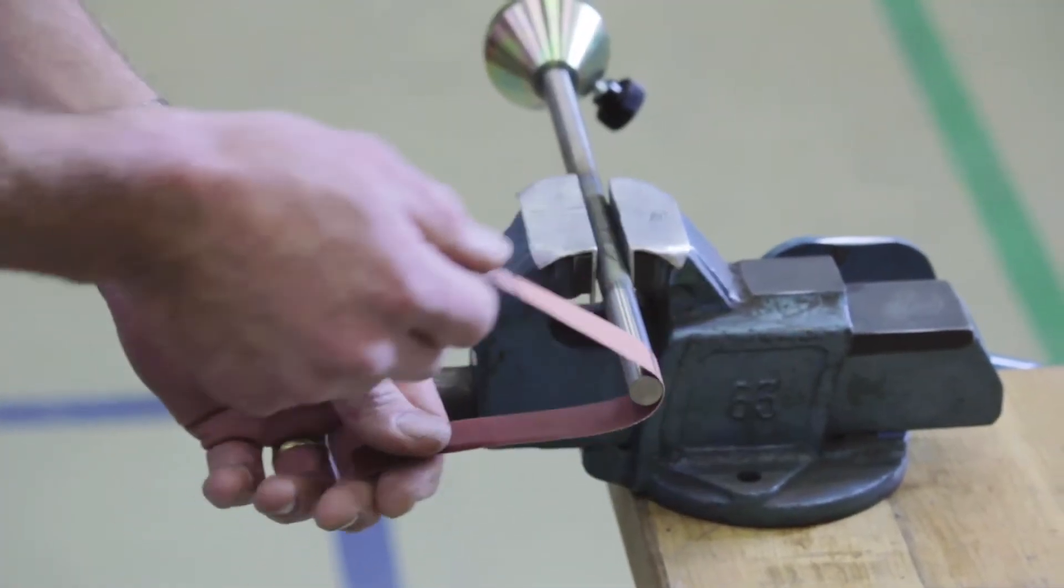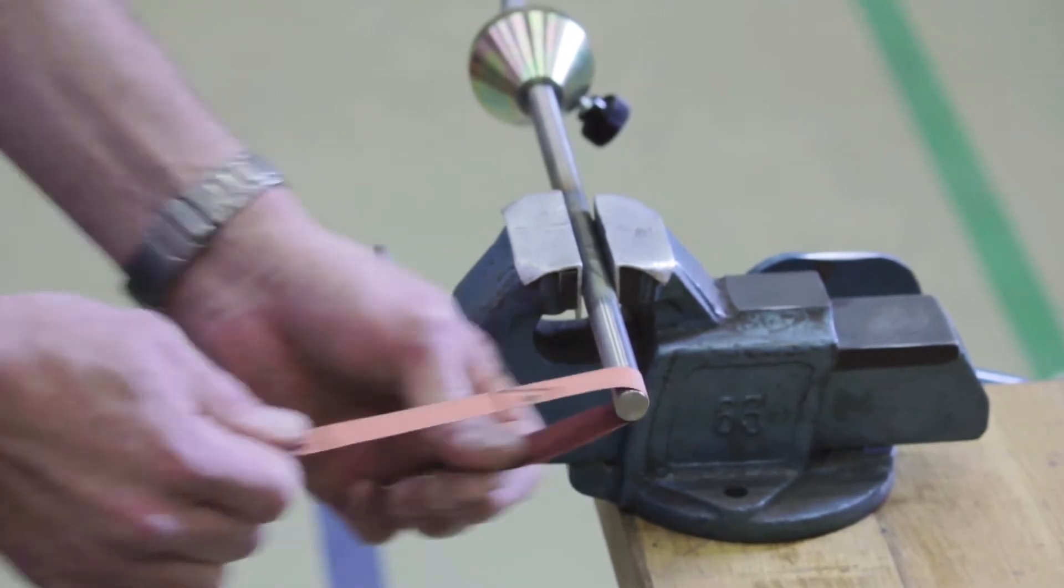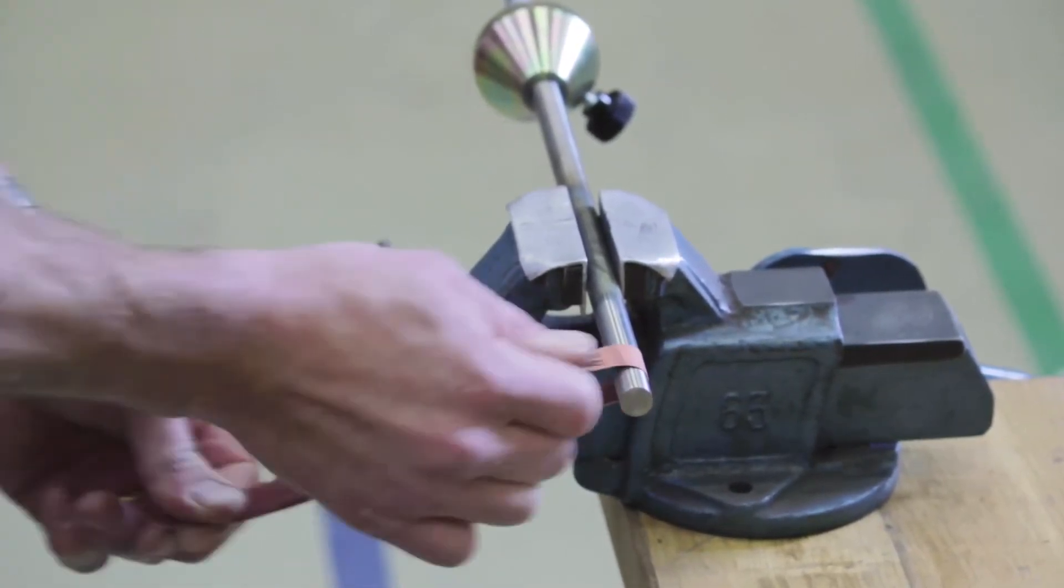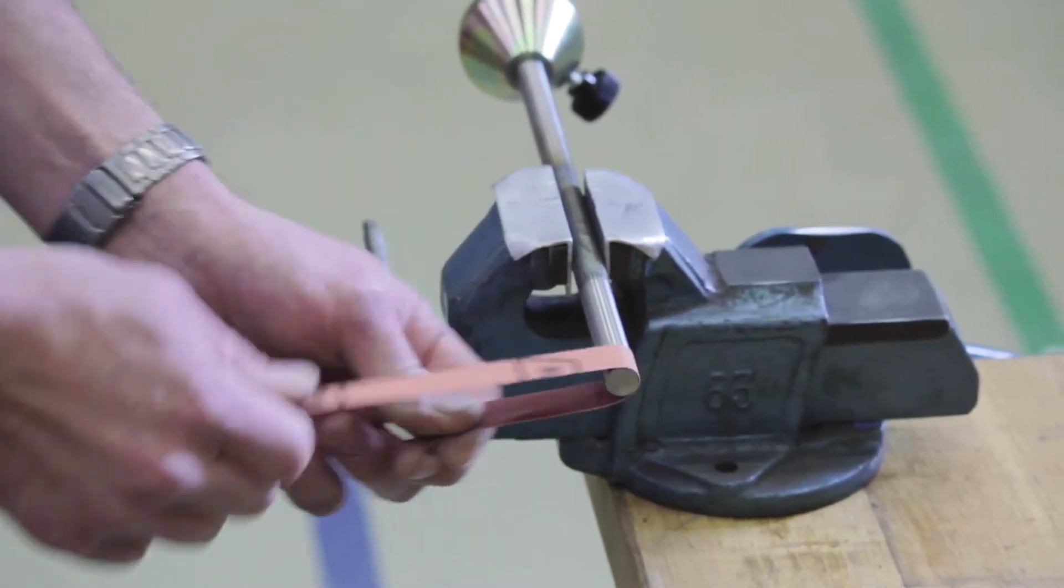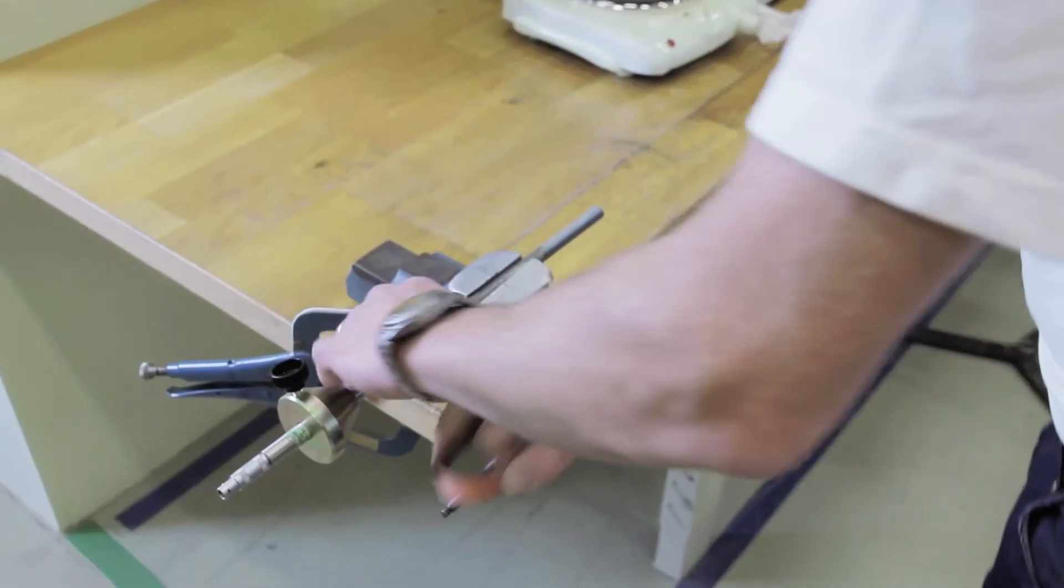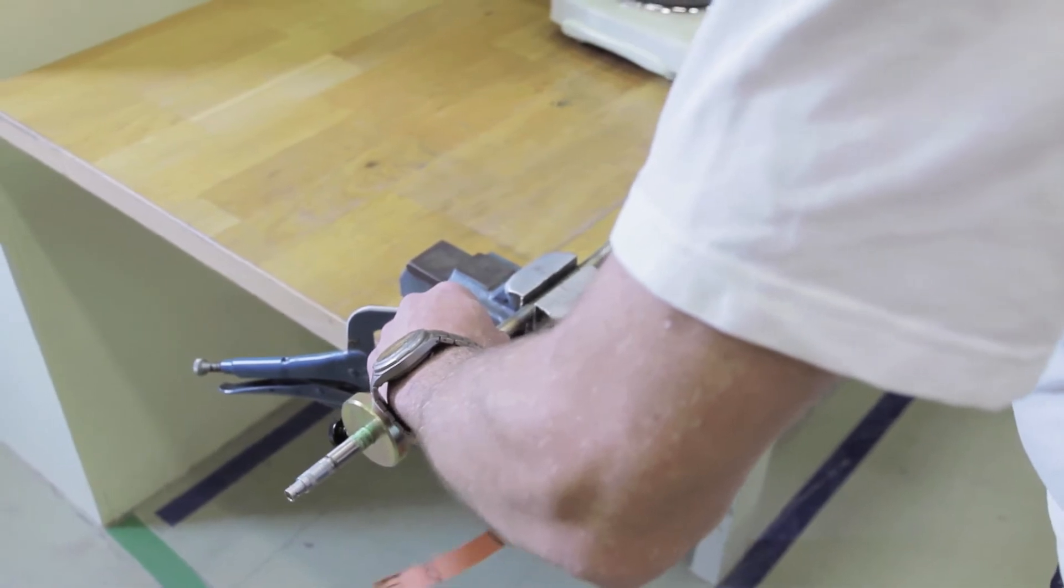When you're finished with the first third, turn the probe one third and continue. Repeat this grinding procedure. Then turn the probe the last third and grind again.